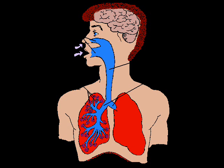Cilia on the surface of the cells beat the mucus, which moves it upwards away from the alveoli towards the throat, where it is swallowed. This helps prevent lung infections.